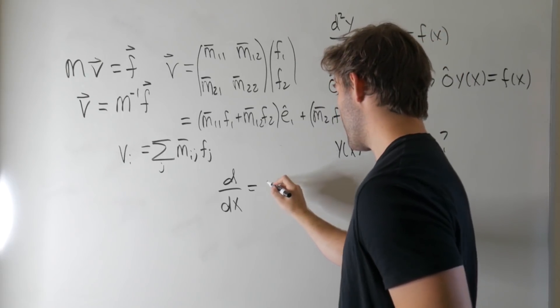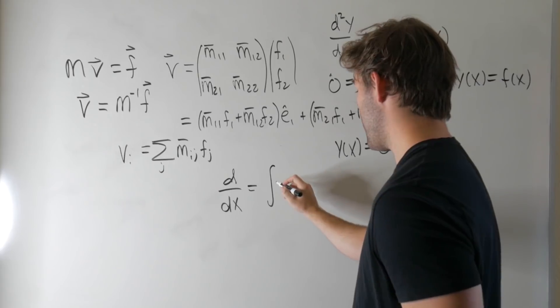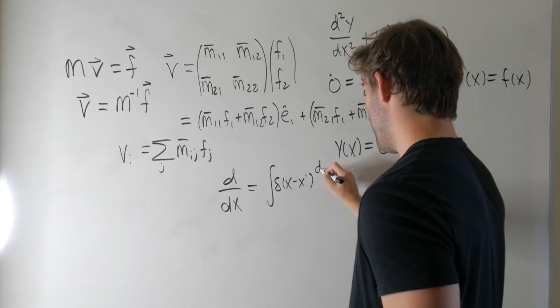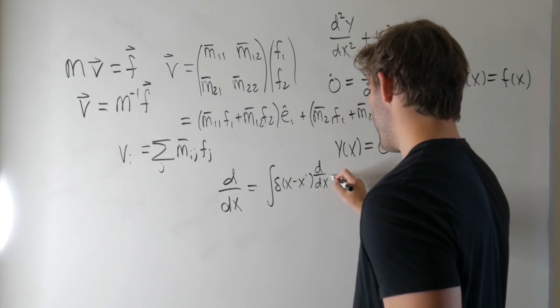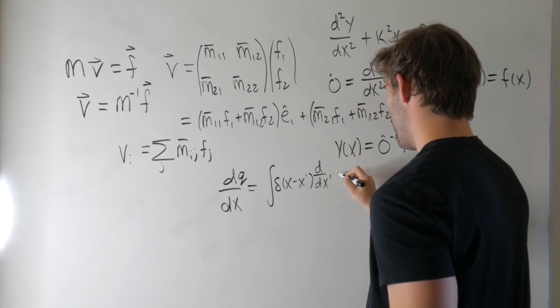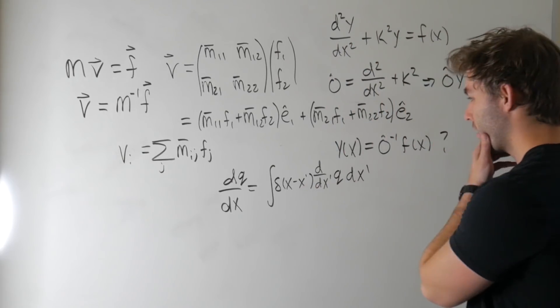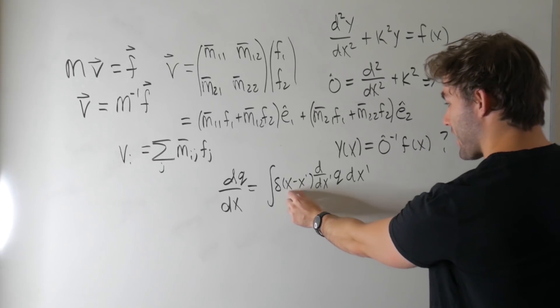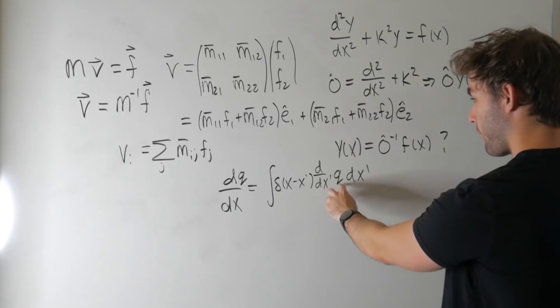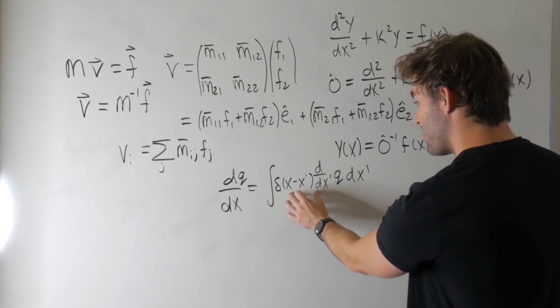Whenever we say something like D over DX, this is an operator, but the second index, that J, has already been summed over, so we end up just writing this. But this is really, in continuous space, this sum becomes an integral, and we get an integral of a delta function, where we get some X minus X prime, D DX prime, and let's have this act on some function, let's call it Q, just to be thorough. So this is picking out the value for X equal to X prime, and then we end up just getting the derivative of Q with respect to X.